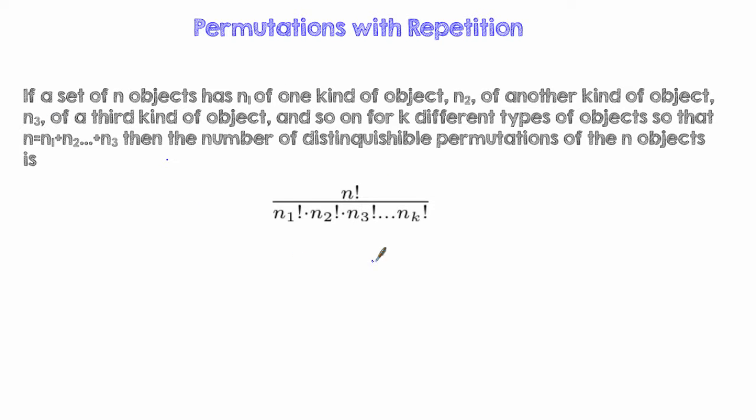And the definition is a little funky. So let's say if we have a set of n objects has n sub 1 of one kind of object, n sub 2 of another kind of object, and n sub 3 of a third kind of object and so on and so forth for k different types of objects. So that n equals n sub 1 plus n sub 2 and it should be n sub k here.